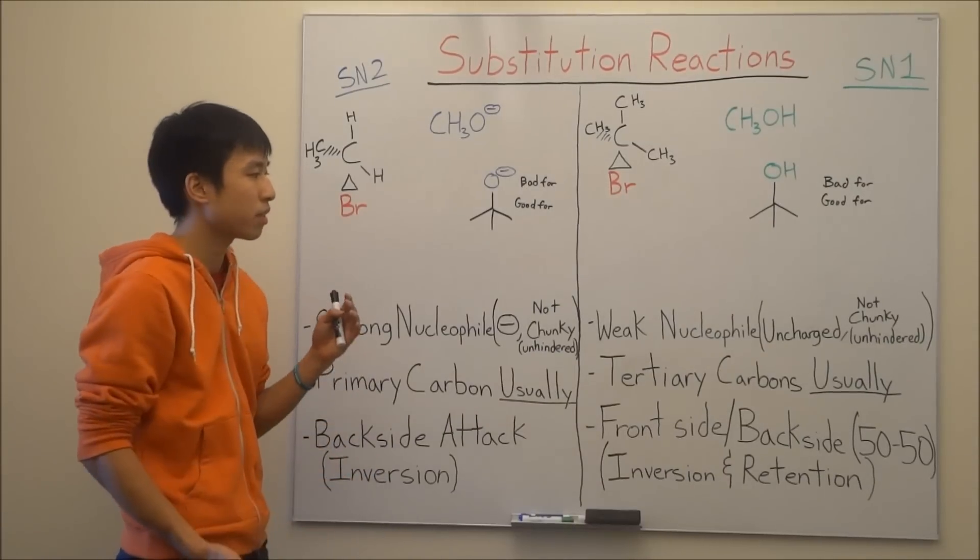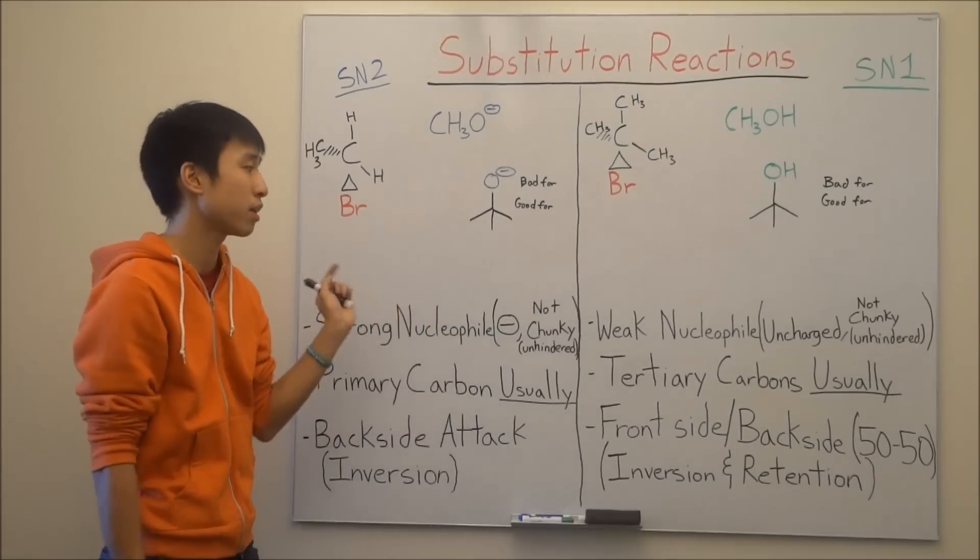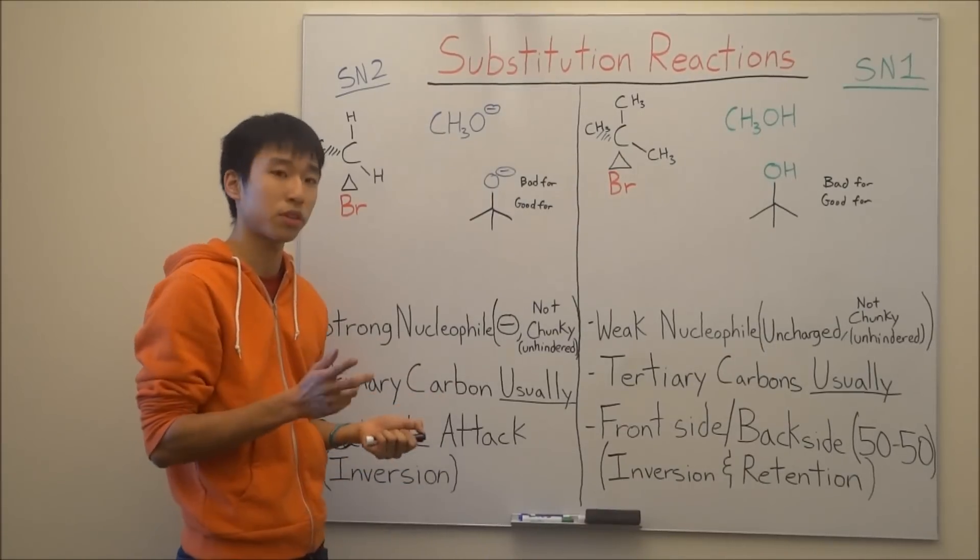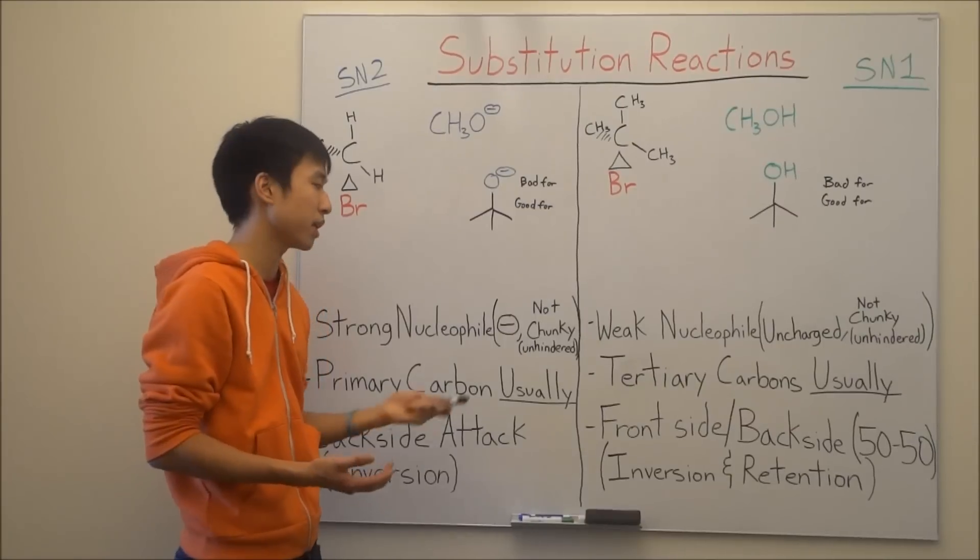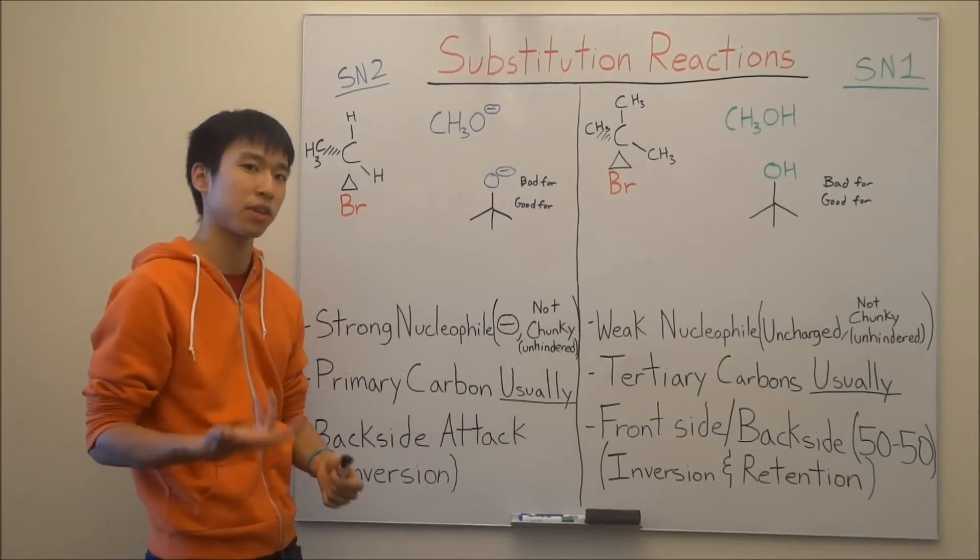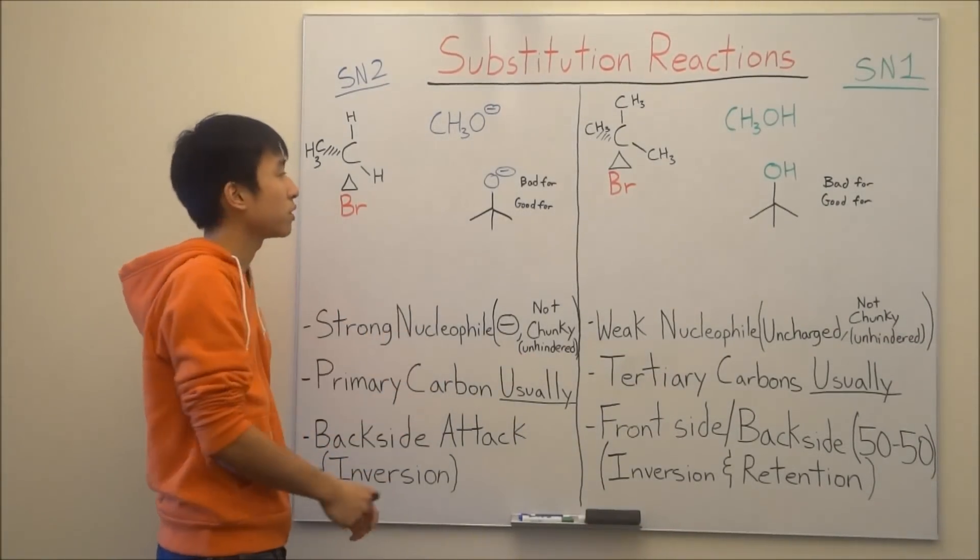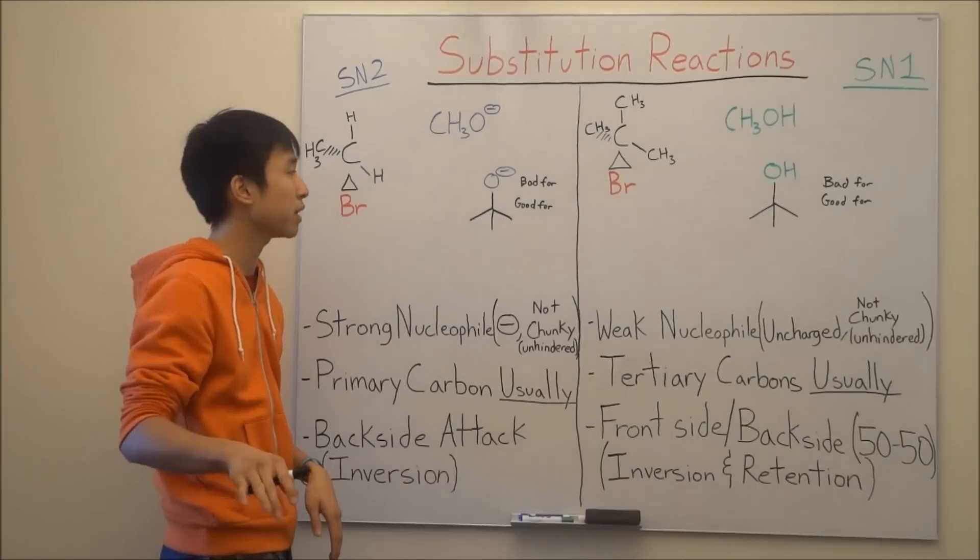So next, another thing that's very important is that for SN2 and SN1, it doesn't matter which one, whether you're a strong or weak nucleophile. In order to be a nucleophile in the first place, you have to be not chunky, which is just a simpler way of explaining unhindered, which I'm sure you guys have probably heard in class. But if you take a look at this molecule here, it's called tert-butoxide. Don't worry too much about the name right now, I'll explain it later in my elimination videos.